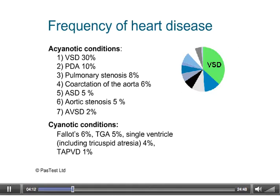Certain teratogens are also associated with the development of congenital heart disease. A classic example is maternal lithium ingestion, giving rise to Ebstein's anomaly — that is to say, right atrialization of the right ventricle, with the tricuspid valve being set low down into the right ventricle and impeding outflow from the right ventricle into the pulmonary trunk.